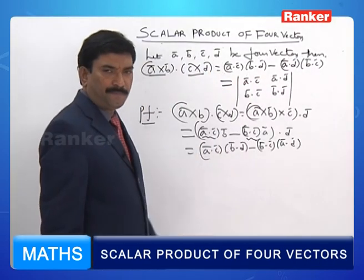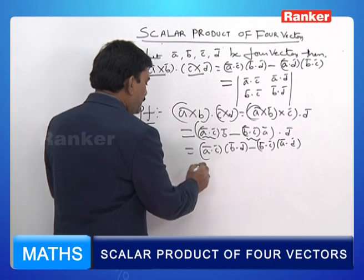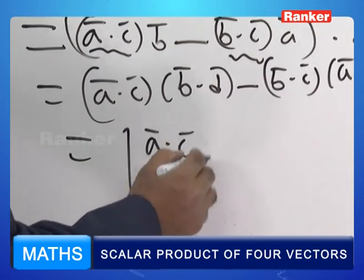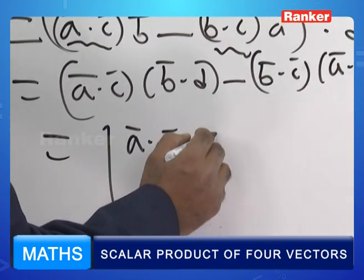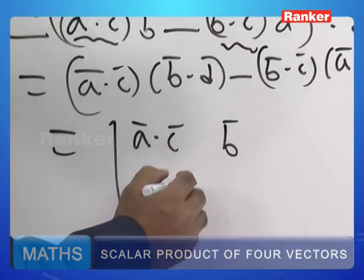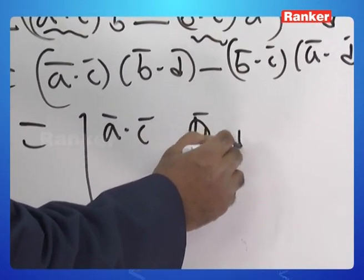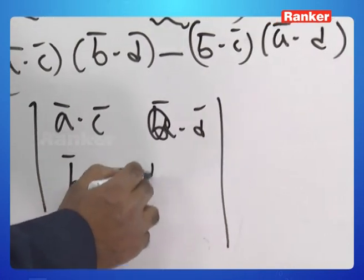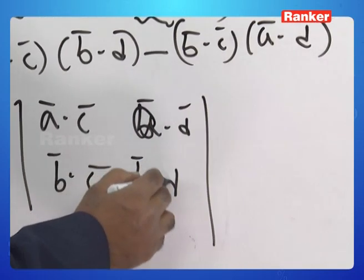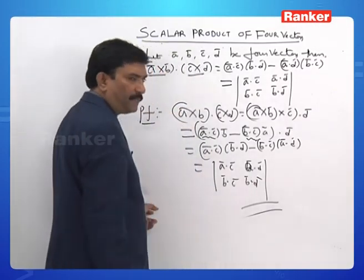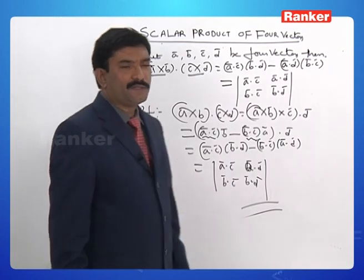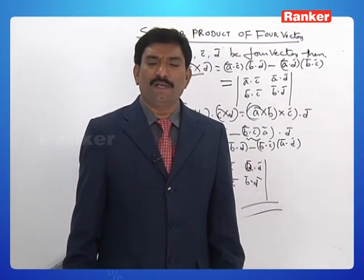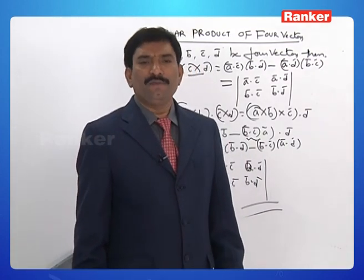Got it? This is the same as the expansion of the determinant: A dot C, A dot D; B dot C, B dot D. This is called the scalar product of four vectors.